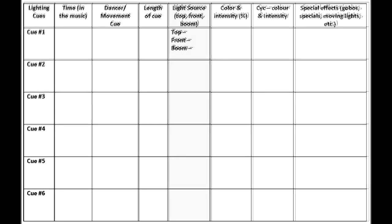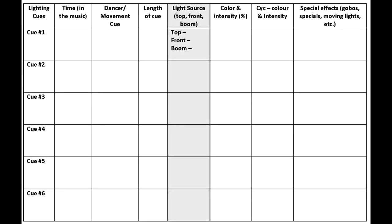The next column is asking about the light source. We focus on the three main lighting sources we have at all of the theatres we use: top lights, front lights, and the booms, or side lighting shining down and across the stage from one wing to the opposite wing. We need you to list which lighting source you are referring to in each look. You may want to adjust only one of the lighting sources, or two, or all three.